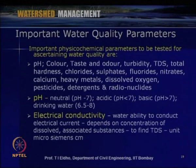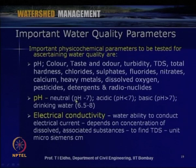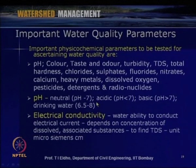pH is one of the most important parameters — water is neutral when pH is 7, acidic when pH is less than 7, and basic or alkaline when pH is greater than 7. For drinking water, pH should generally vary from 6.5 to 8.5, which is also the range prescribed for irrigation. Electrical conductivity measurements show the water's ability to conduct electrical current, depending on the concentration of dissolved substances — it indicates the presence of total dissolved solids (TDS) like sodium chloride, potassium, and other dissolved solids, measured in micro-Siemens per centimeter.